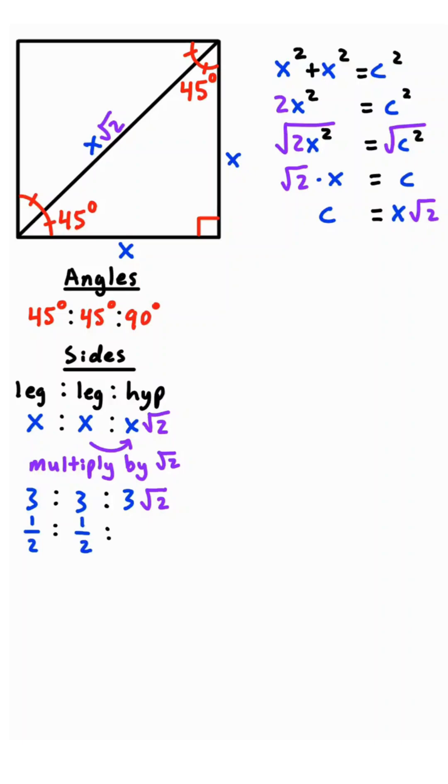If the leg is 1 half, the other leg is 1 half, and the hypotenuse is 1 half root 2. If the leg is root 2, the other leg is root 2, and the hypotenuse is root 2 times root 2, which simplifies to 2.